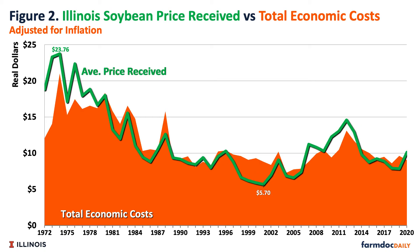The inflation-adjusted average Illinois soybean price received versus total economic cost to produce soybeans is displayed in Figure 2. $23.76 per bushel in 1974 was the highest adjusted average price received, and in 2001, $5.70 per bushel was the lowest adjusted average price received. This compares to the nominal high and low values of $14.60 per bushel in 2012 and $4.47 per bushel in 1972 respectively. 2012 was only the 11th highest in real dollars for the average price received for soybeans. The highest adjusted total economic cost to produce soybeans was $21.01 per bushel in 1974, and the lowest was $7.28 per bushel in 2004.